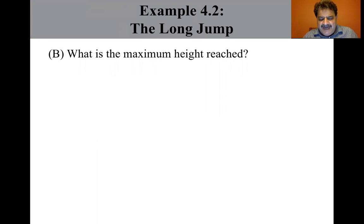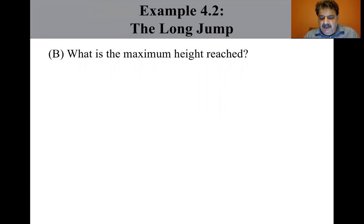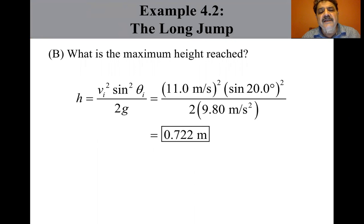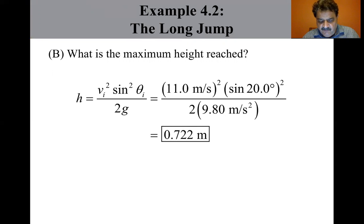What is the maximum height reached? To find the maximum height reached, we use the height equation: V-initial squared times sine-squared of theta-initial over 2G. If you put the numbers into that, you get 7.22.